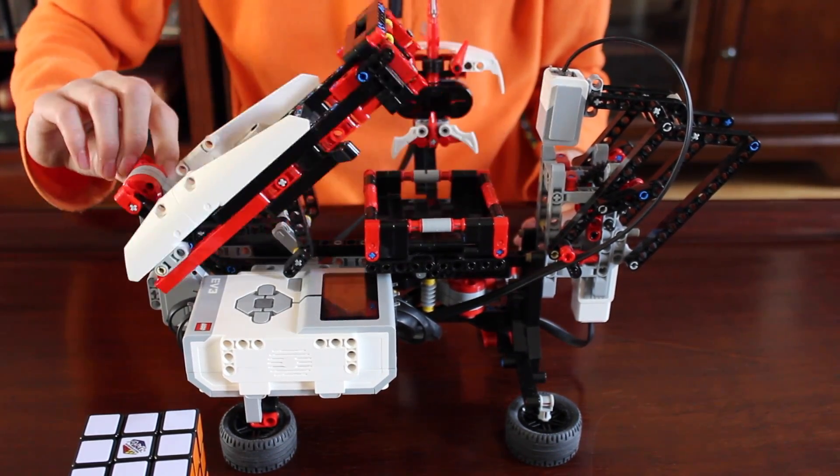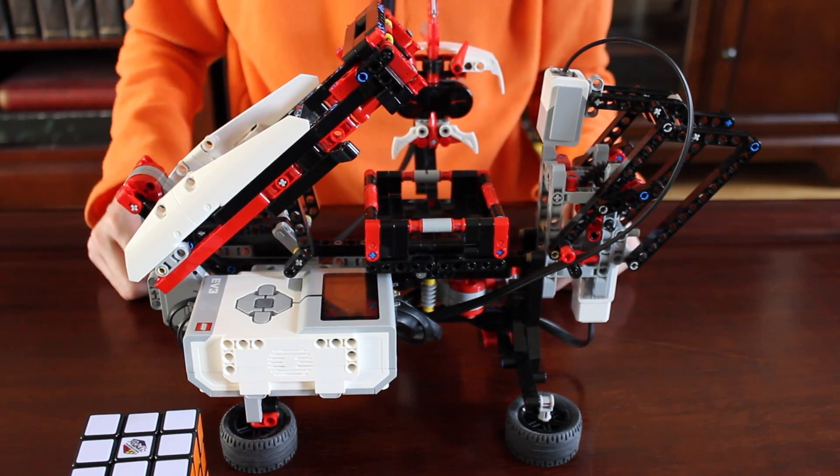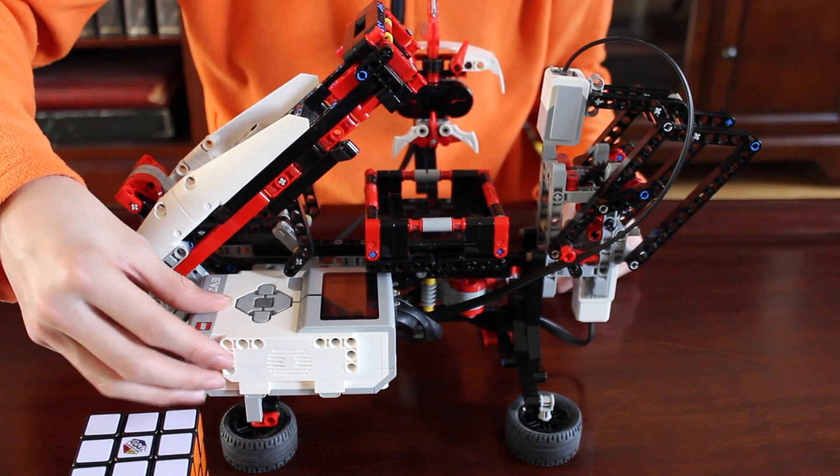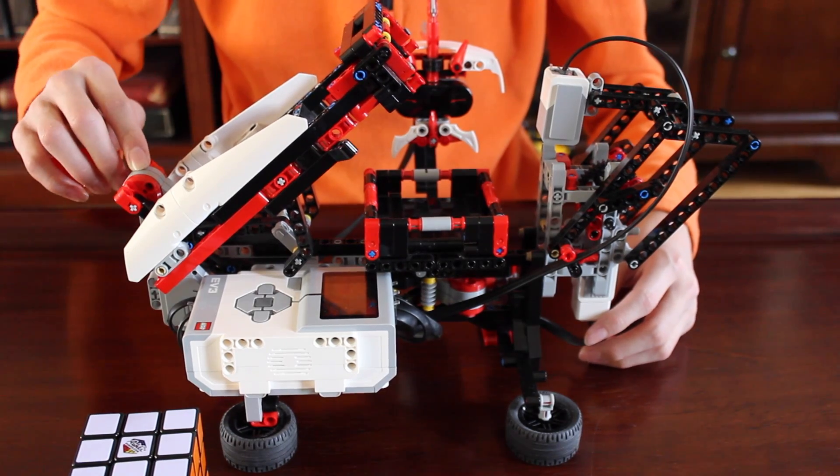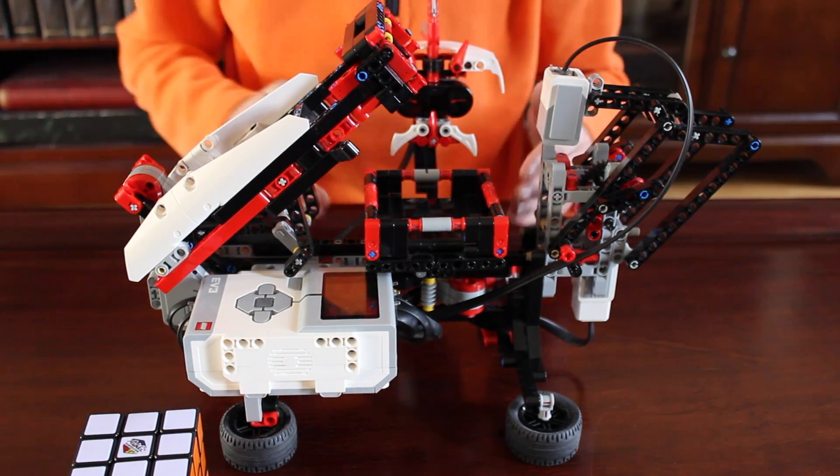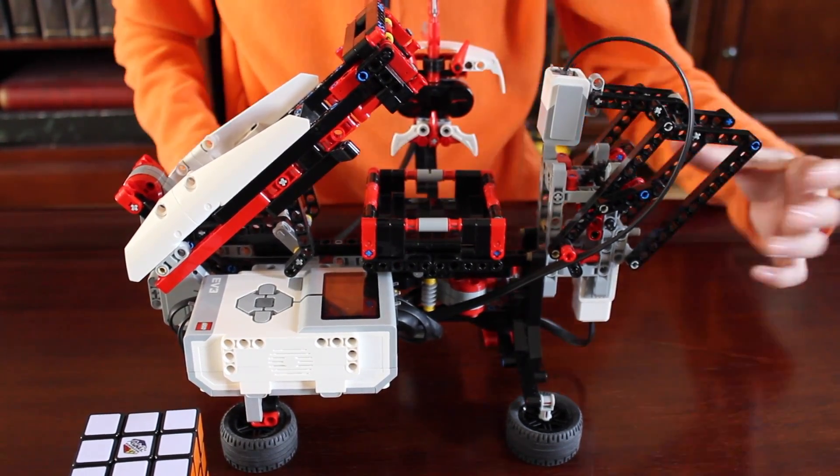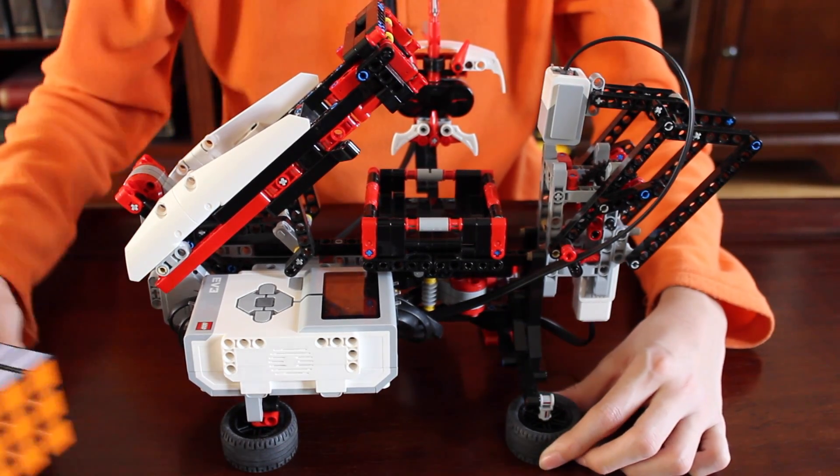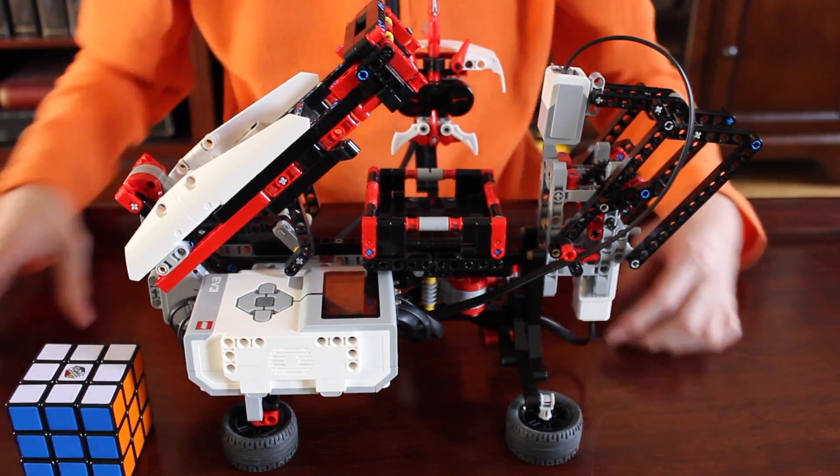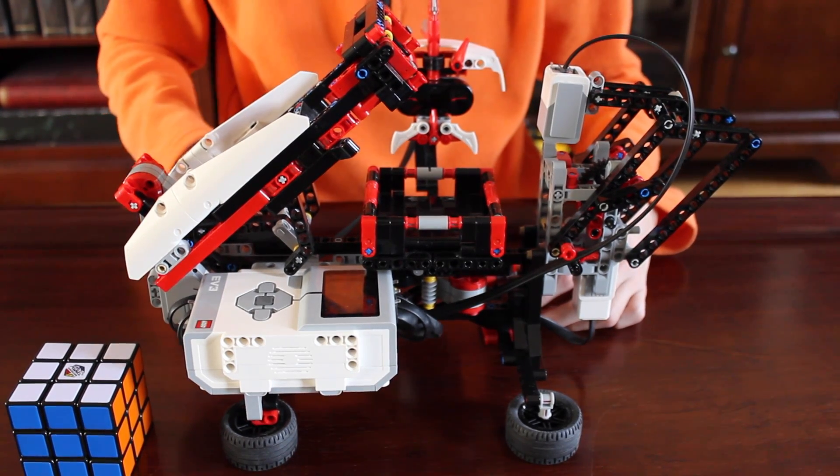And here's the flipping arm that grabs and flips the cube. And here's the EV3's brain brick. Mindcuber has three motors: one for the flipping arm, one to rotate the platform, and one for the color sensor. It stands on four wheels, and it uses most of the EV3 set's parts.